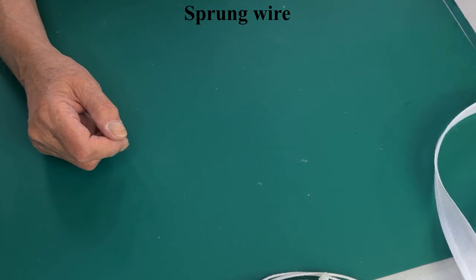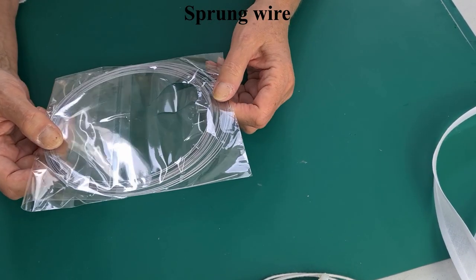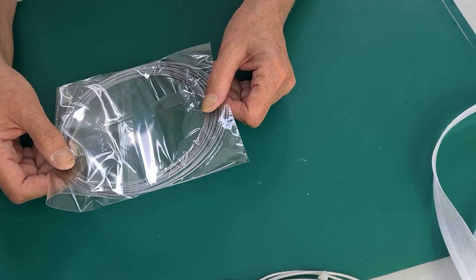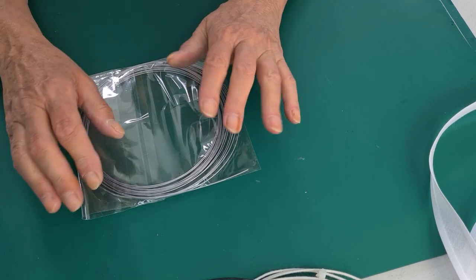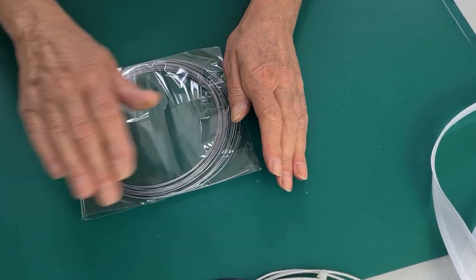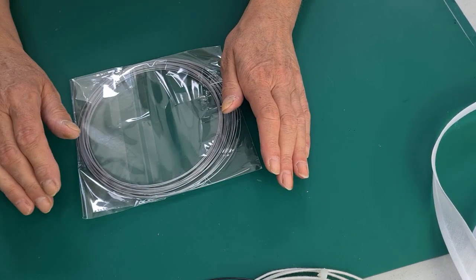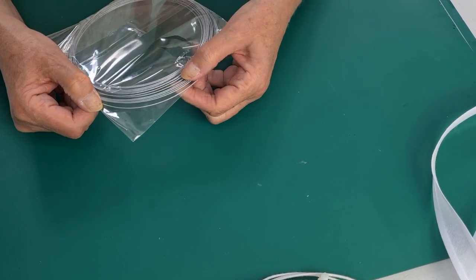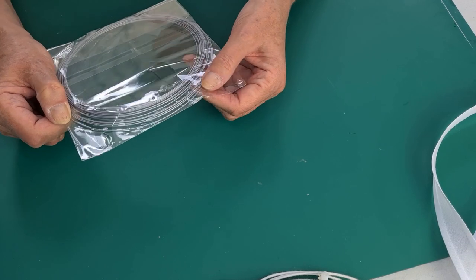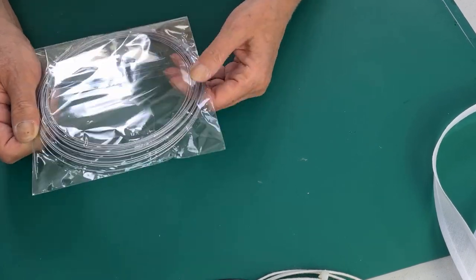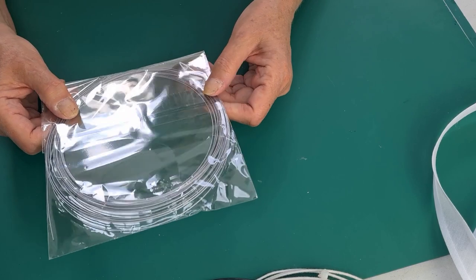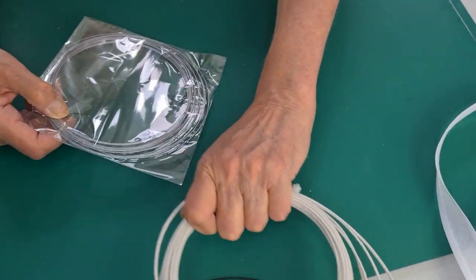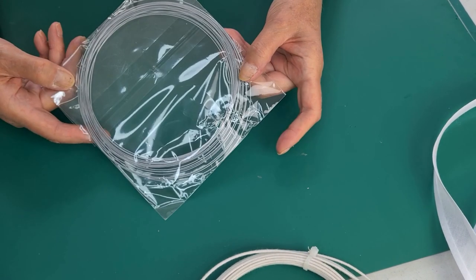Then you've got sprung wire. Sprung wire is exactly what it says, very springy. It doesn't have the flexibility to bend because it's sprung into those rounds, but it's fantastic for very thin brim edges. You'll have seen it when I've used it in some of my illusion brims. Again, you need wire cutters for this and for this, although the brim reed you can cut with scissors.